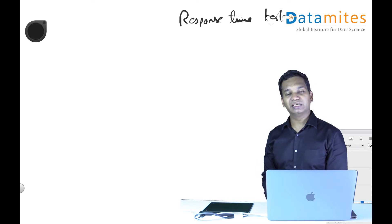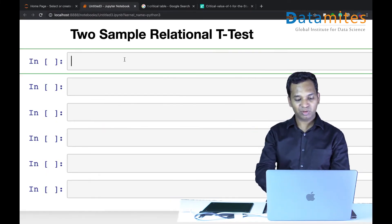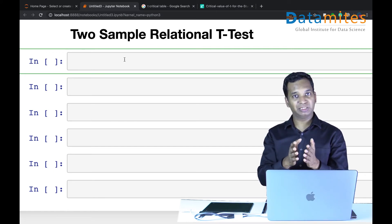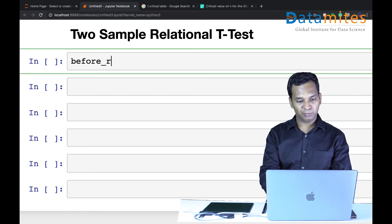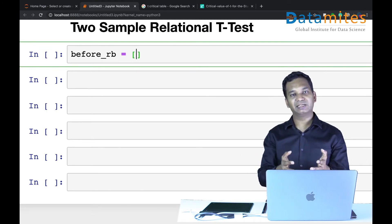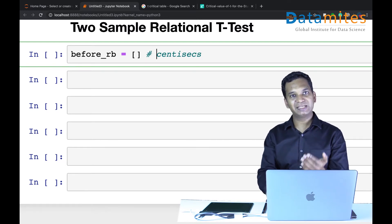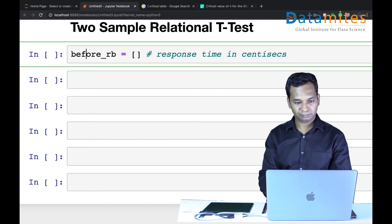It's usually in milliseconds, but here I'm going to take it as centiseconds. I'm going to pick five volunteers and conduct an experiment. Before giving Red Bull, I call this dataset before Red Bull or before_rb. I'm going to capture the response time. Response time in centiseconds.